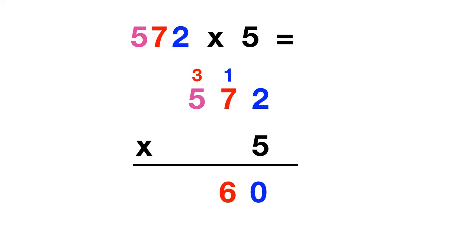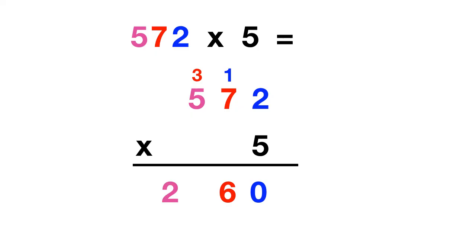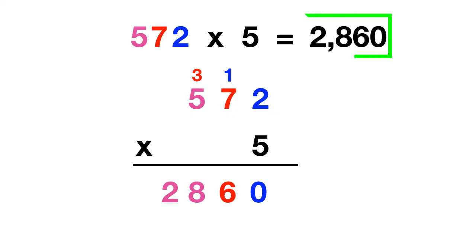Finally you multiply 5 times these 500s. 5 times 5 is 25, but you have to add in the 3. 25 plus 3 is 28. So 572 times 5 gives you 2860.